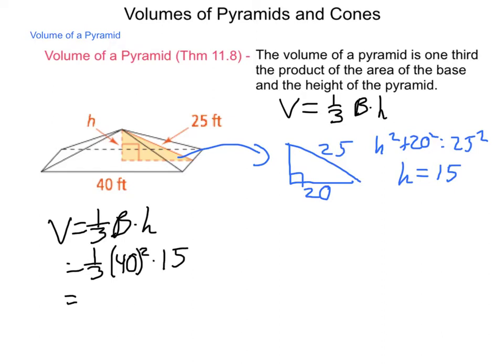40 squared is 1600, and a third of 15 is 5. 1600 times 5 is 8,000, and we'll put this into cubic feet.